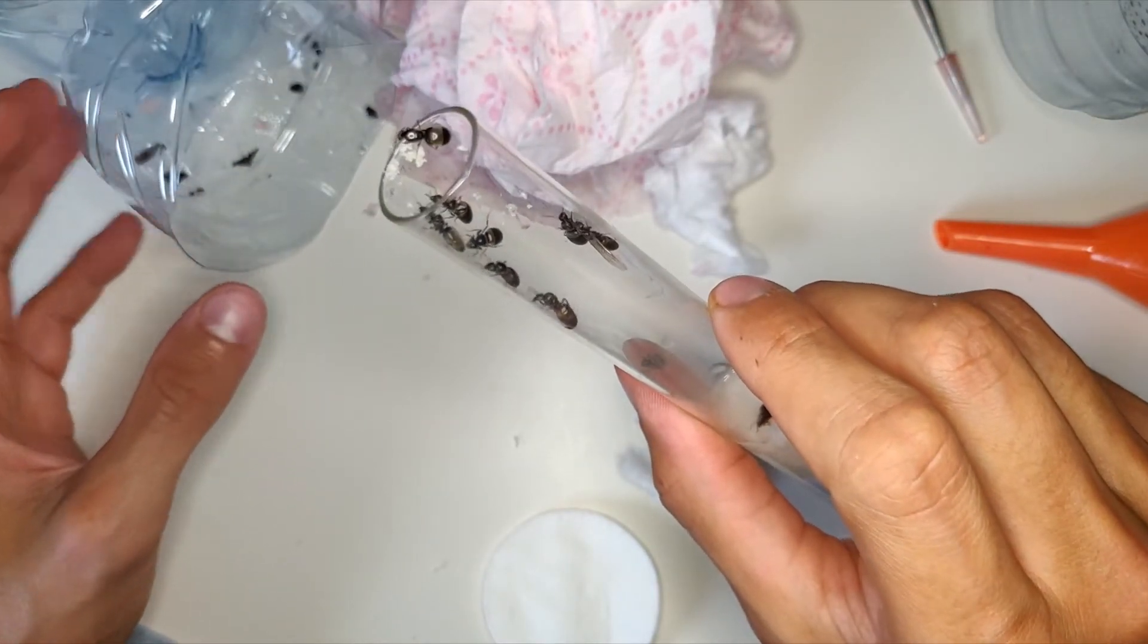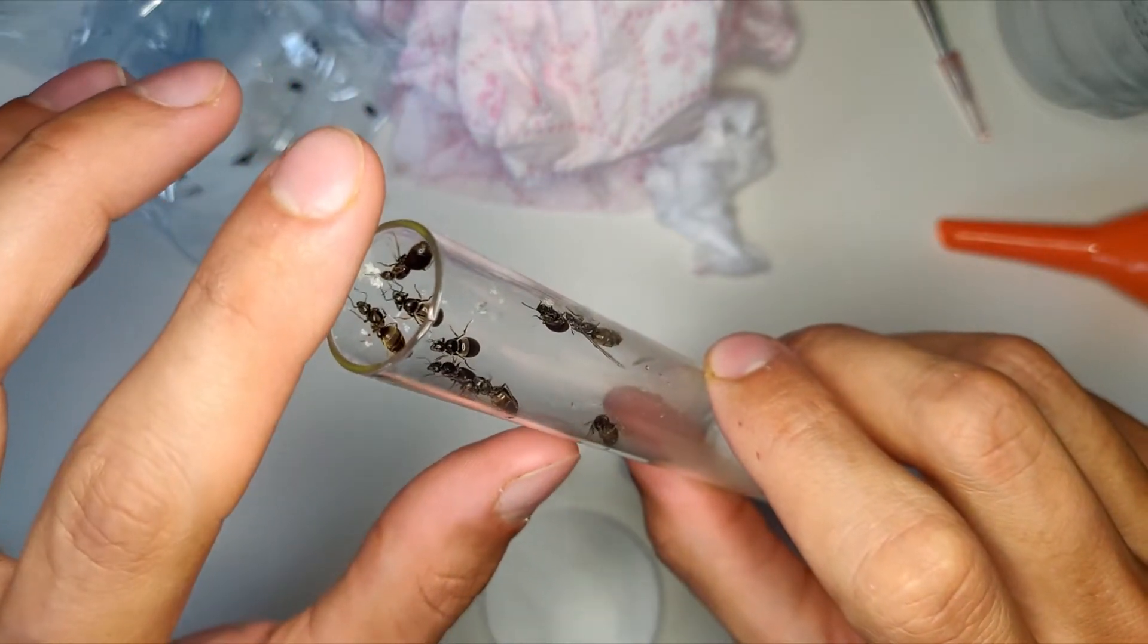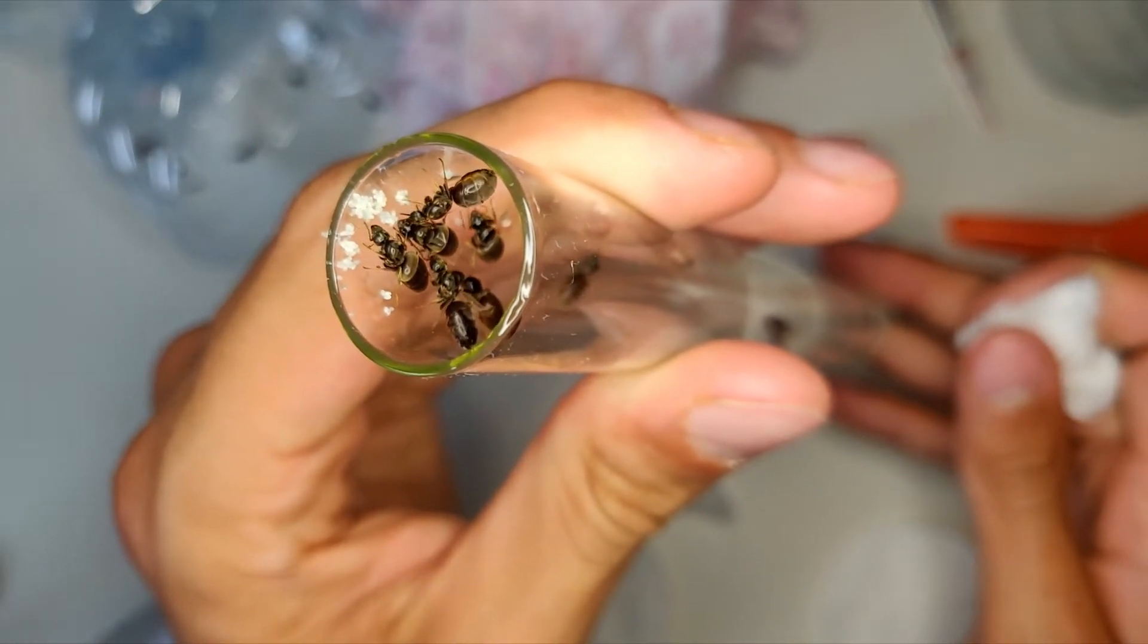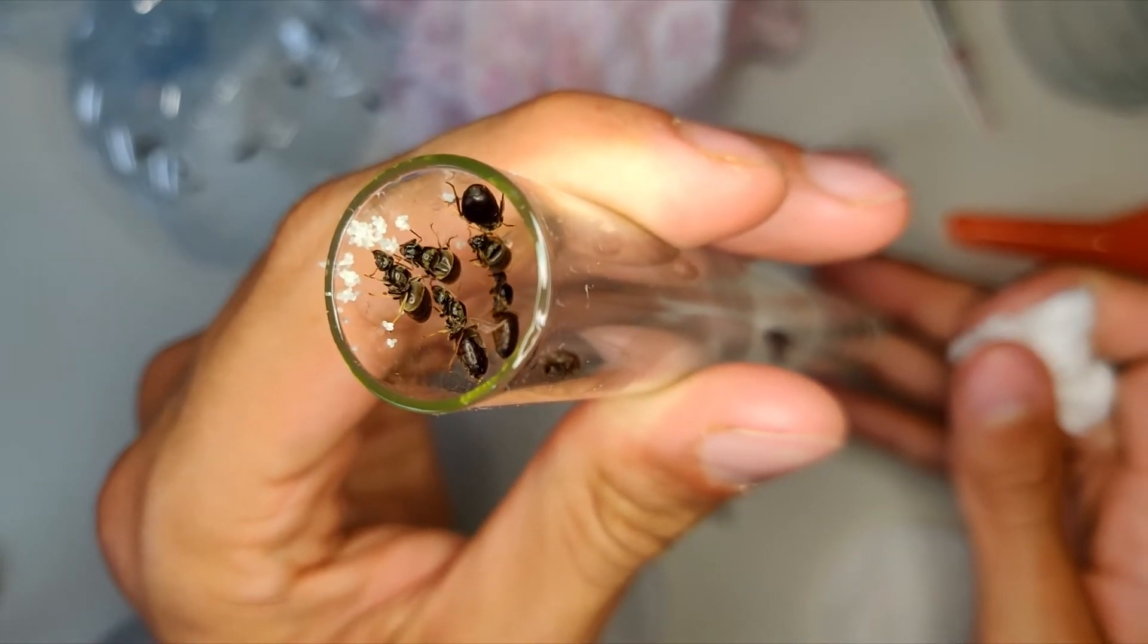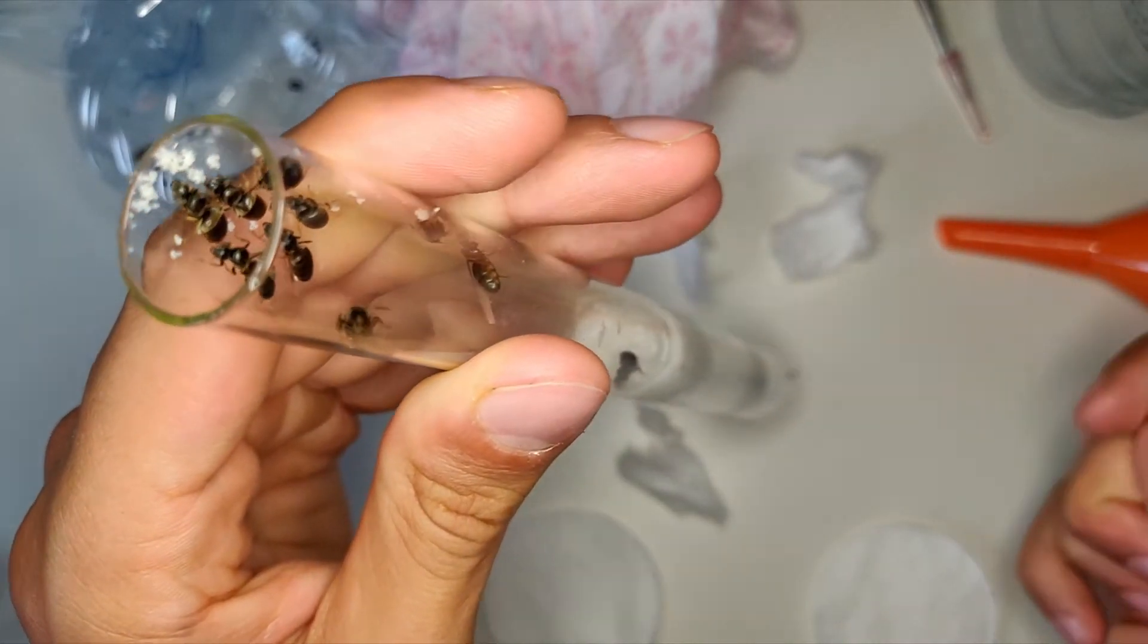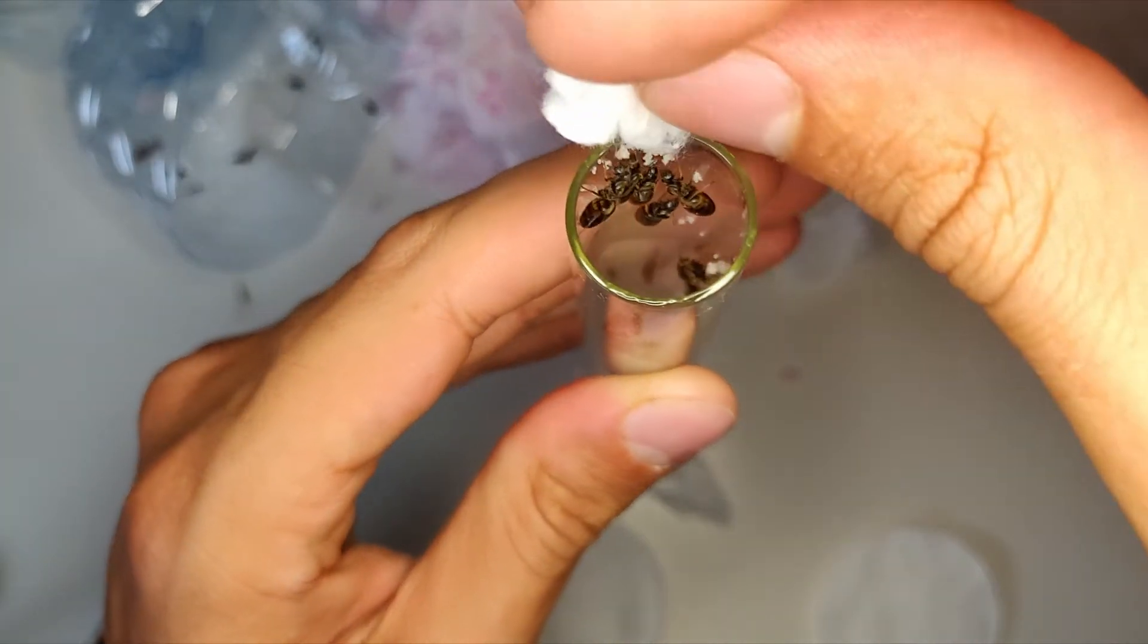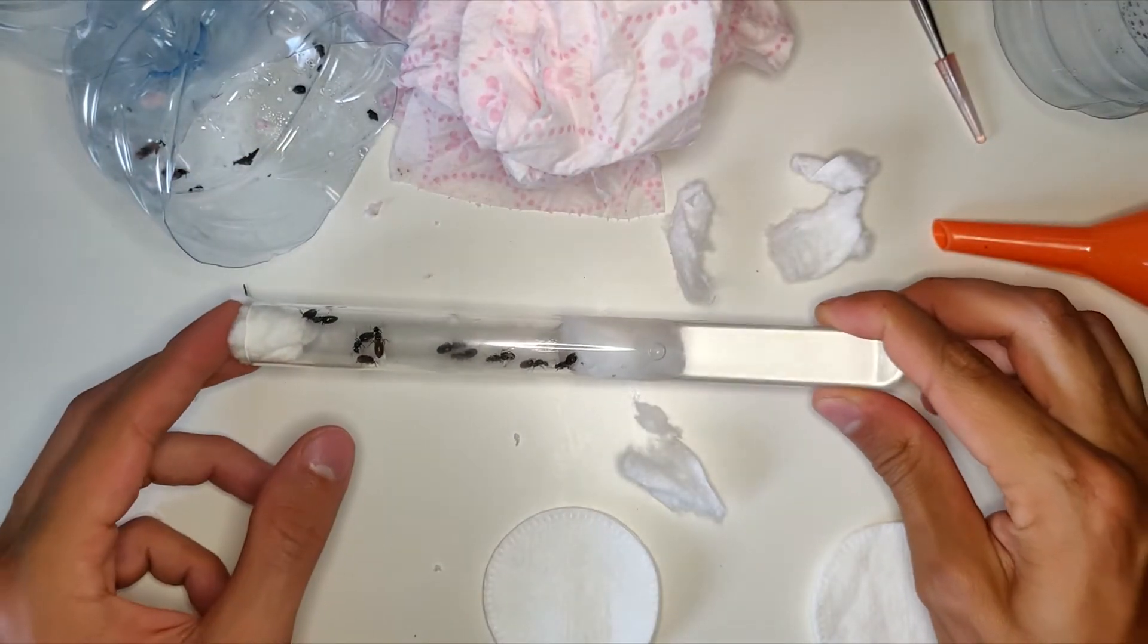Okay, all of them are officially inside. Let's get a nice shot for you guys. Look at that, 10 queens from Lasius flavus or niger as one super colony, or soon to be super colony. 10 queens inside this test tube ant colony setup.